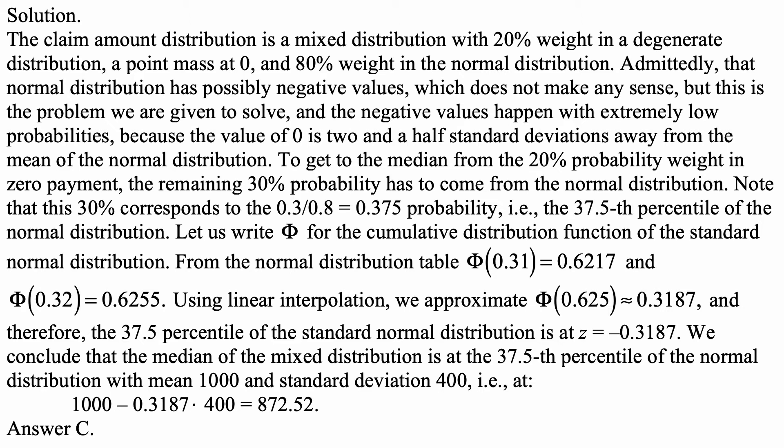To get to the median, from the 20% probability weight at zero payment, the remaining 30% probability has to come from the normal distribution. Note that this 30% corresponds to 0.3 divided by 0.8, because there is a 0.8 weight in the normal distribution — so that is 0.375 probability.